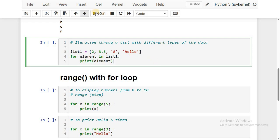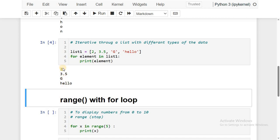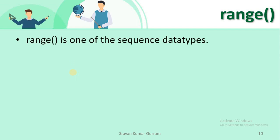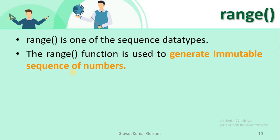We must also understand the range function, since we frequently use it when working with for loops. Range is one of the sequence data types, already covered with examples in the Python programming playlist. The range function is used to generate an immutable sequence of numbers — once generated, the numbers cannot be changed.